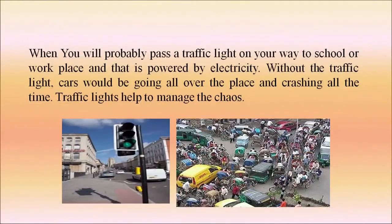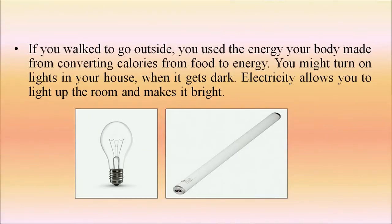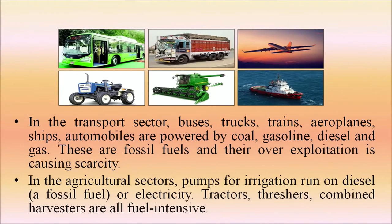You will pass a traffic light on your way to school or the workplace, and that is powered by electricity. Without traffic lights, cars would be going everywhere and crashing. If you walk outside, you use energy your body made by converting calories from food. You might turn on lights in your house when it gets dark. In the transport sector, buses, trucks, trains, aeroplanes, ships, and automobiles are powered by coal, gasoline, diesel, and gas — fossil fuels whose over-exploitation is causing scarcity.